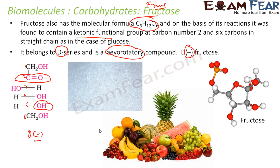Commercially, fructose is derived from sugarcane, sugar beet, etc. Sugarcane on hydrolysis gives equal amounts of glucose and fructose. So to summarize fructose: it has the same molecular formula as glucose. The only difference is fructose has a ketone group while glucose has an aldehyde group, and fructose is levorotatory (D minus) while glucose is dextrorotatory (D plus).